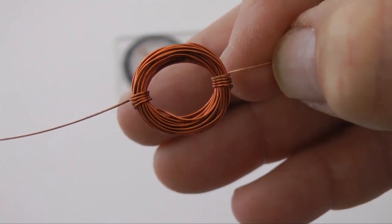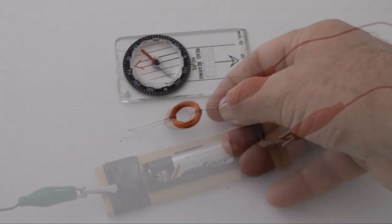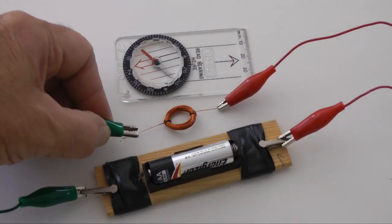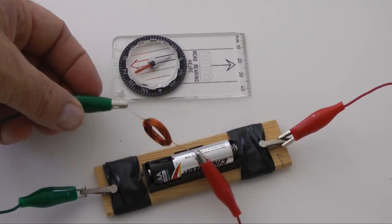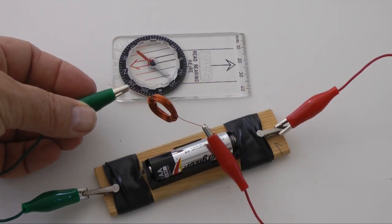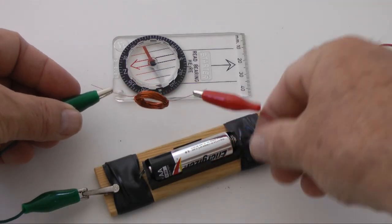This coil is the electromagnet in our simple motor. Connecting a AA battery, we can see the magnetic force from the coil moving the magnet in the compass. The coil is polarized. One side is north, the other is south.